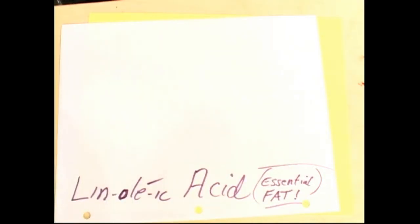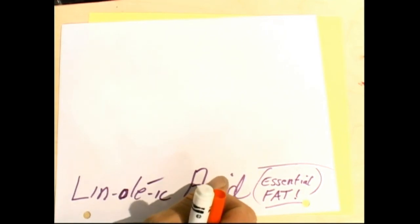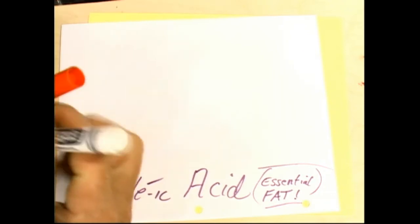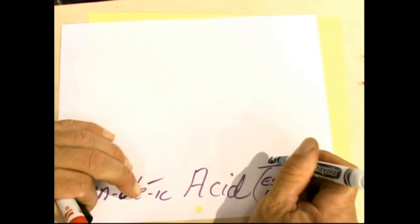We see there's a couple double bonds in the middle. So we're going to count in 1, 2, 3, 4, 5, 6. That's why this is one of those what they'll call omega-6.